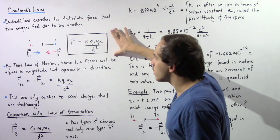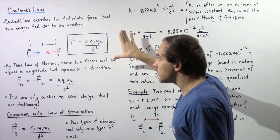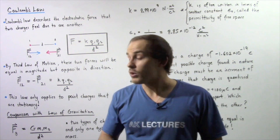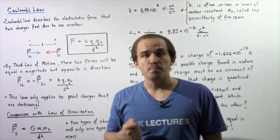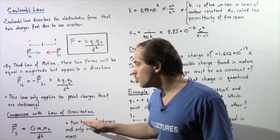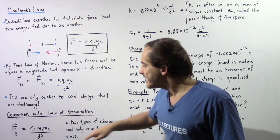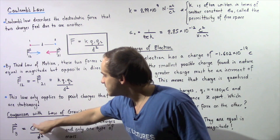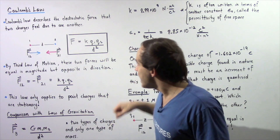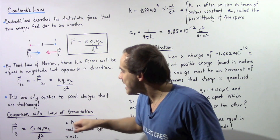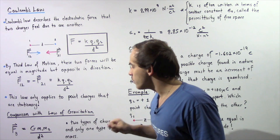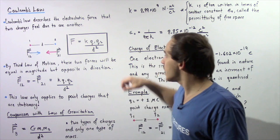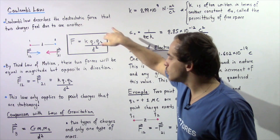This equation looks very much like the equation of the law of universal gravitation, which states that any two masses M1 and M2 will feel a force due to one another. The constant in that case is the gravitational constant G, the masses are M1 and M2, and notice the distance between those masses is also squared — just like the distance is squared in Coulomb's law.